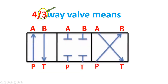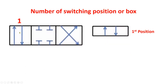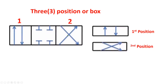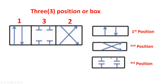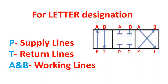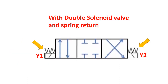The three refers to the number of switching positions or boxes: position number one, position number two, and position number three. For letter designations: P means supply lines, T means return lines, A and B are working lines. The last symbol shown is a solenoid valve with return spring.